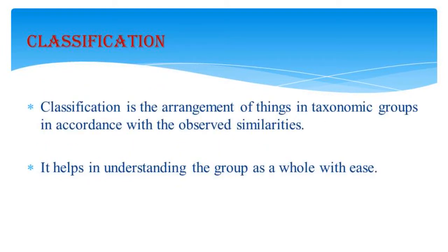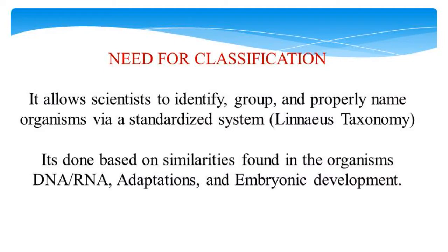So, what is classification? It is the arrangement of things in taxonomic groups in accordance with the observed similarities, and it helps in understanding the group as a whole with ease. The need for classification is that it allows scientists to identify, group, and properly name organisms via a standardized system called the Linnaeus Taxonomy. Carolus Linnaeus is the father of taxonomy, and all modern classification systems have their roots in his hierarchical system, based on similarities in DNA or RNA, adaptations, and embryonic development.